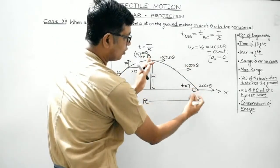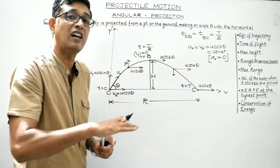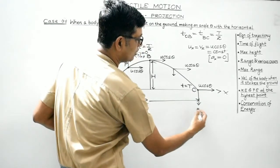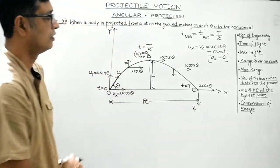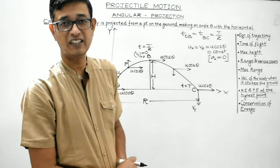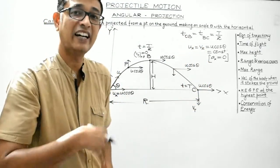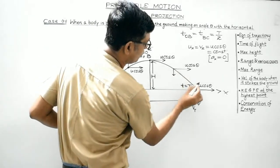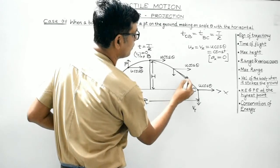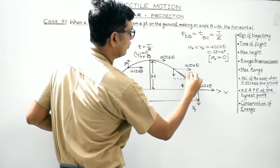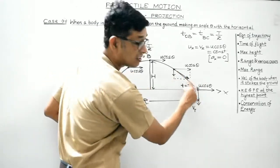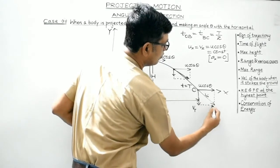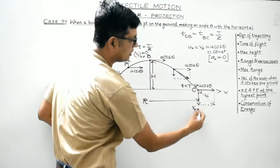When the body comes down toward earth, its vertical component of velocity starts increasing in magnitude at a constant rate, and it is maximum when it strikes the ground. At any instant when a body is following a curved path, the direction of motion is given by drawing a tangent at that point. The net velocity is the resultant of vx and vy. At the instant it strikes the ground, the resultant velocity is given by √(vx² + vy²).